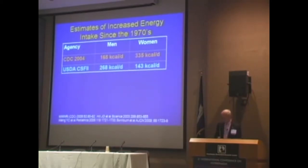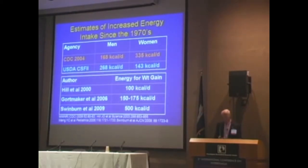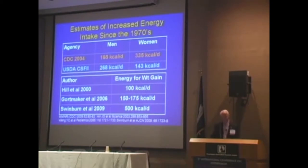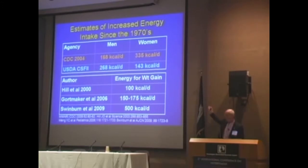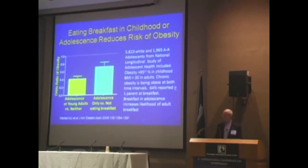How many excess calories does this take? The USDA and CDC estimates of increased food available per day per person vary. Hill's estimate is about 100 calories per day — I think that's probably low. Gortmaker and Dietz's estimate for children is 150 to 175 — that may also be a little low. I think Swinburne's estimate of 500 calories per day is probably the best analysis. So it's anywhere between 100 and 500 excess calories per day to produce the epidemic we have, and increased food consumption accounts for almost all of it.